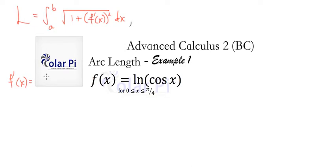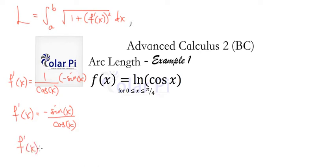For the given f, f prime of x will equal 1 over cosine of x times, by chain rule, negative sine x. So f prime of x equals negative sine x divided by cosine x, and that means f prime of x is equal to negative tan x.